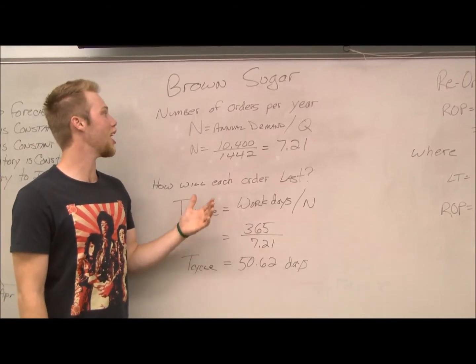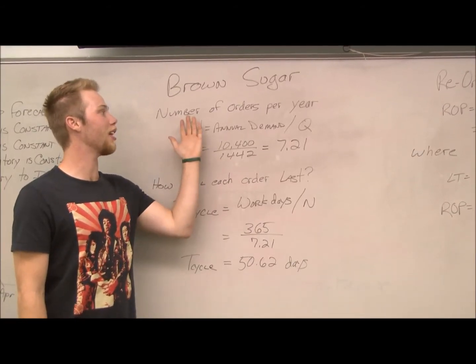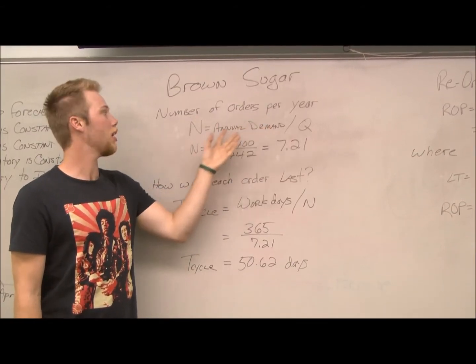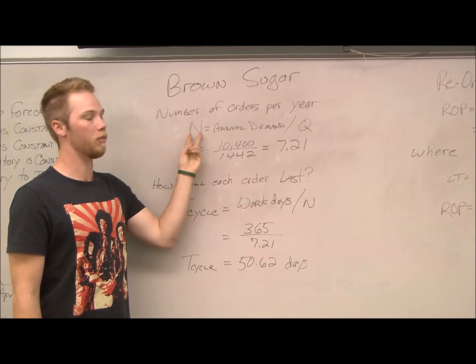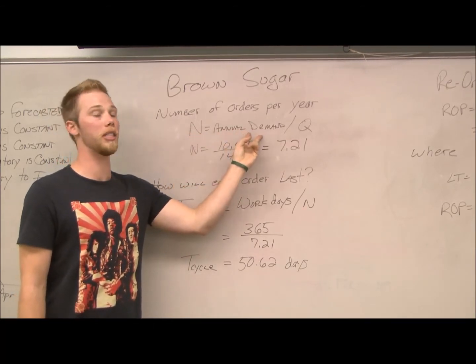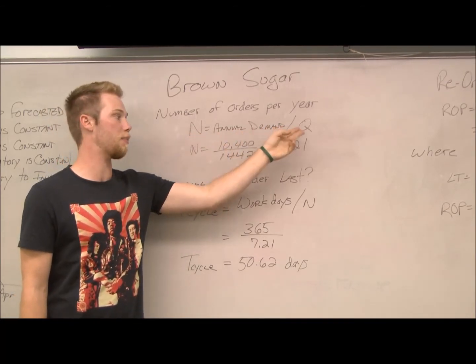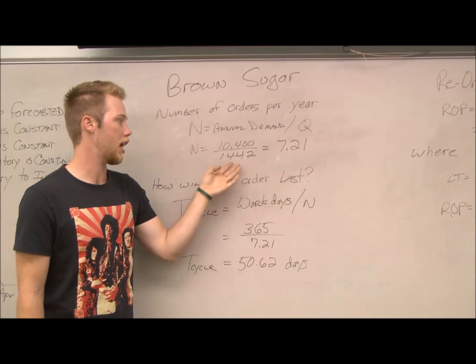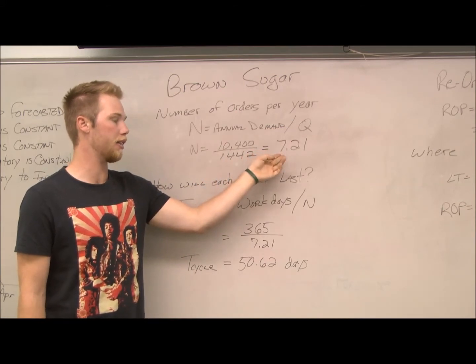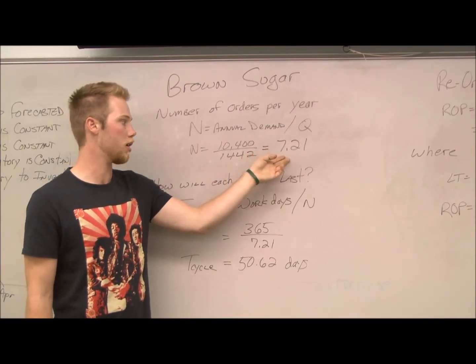If Mr. Yager wants to find out the number of orders per year — indicated by N — he takes annual demand, or D, and divides that by Q. That gives us 2.21 orders per year.